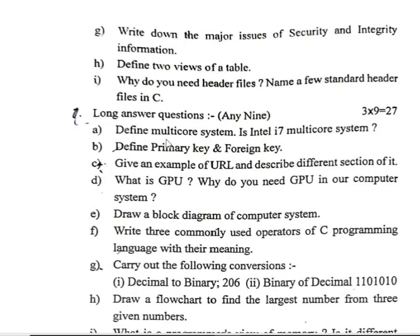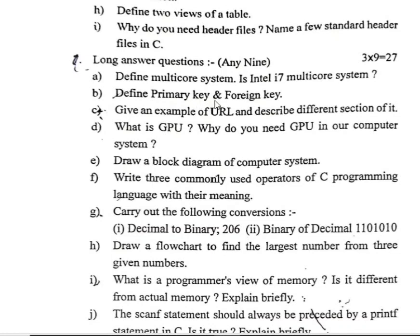Long answer questions, any nine, three marks each, totaling twenty-seven marks. (a) Define a multi-core system — for example, Intel i7 multi-core system. (b) Define primary key and foreign key. (c) Give an example of a URL and describe its different sections. (d) What is a GPU? Why do you need a GPU in your computer system?